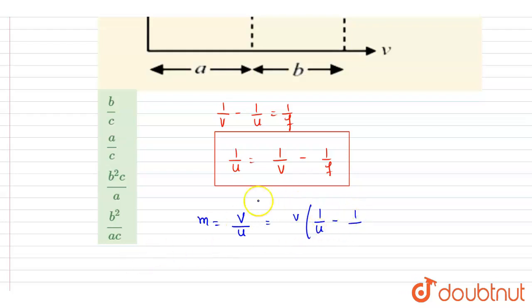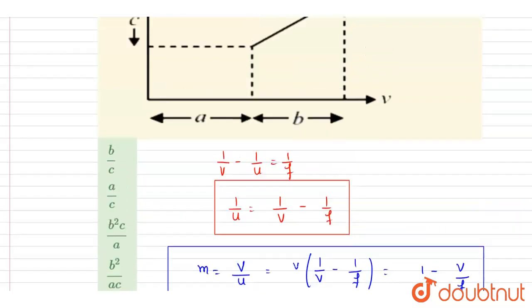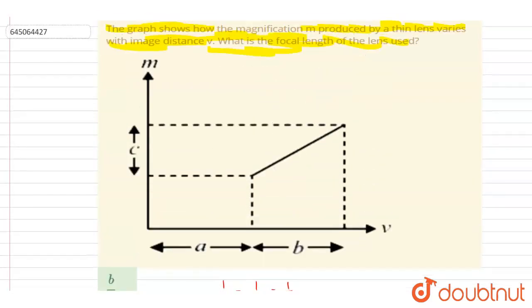So it is 1/v - 1/f, so it will be 1 - v/f. This will be the magnification here. Now if you see the curve again, if you see the slope, this distance is b and this distance is c, right?